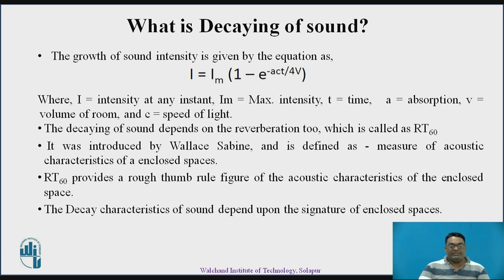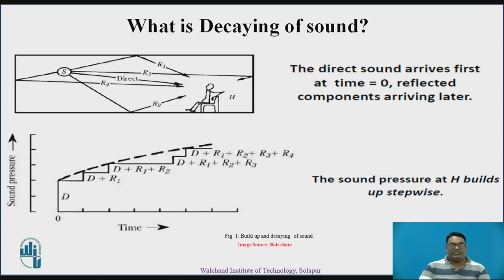The decaying characteristics of sound depend upon the signature of enclosed spaces — that is, the structure of the channel and how it is enclosed. As you can see in the diagram, there is a person sitting and S is the source from where the sound gets radiated. The sound, when radiated, travels to this particular person via multiple reflections and also in a direct way.